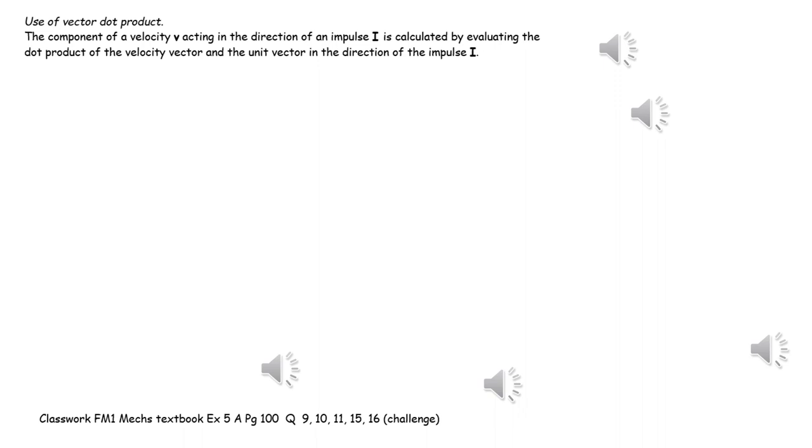This is a really important little method. So the component of a velocity V acting in the direction of an impulse I is calculated by evaluating the dot product or scalar product of the velocity vector and the unit vector in the direction of the impulse I. Example two is an example of this method.